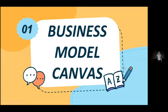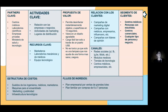Business Model Canvas. Este se compone por nueve bloques. El primero es Partners Clave, que es cómo nuestros compañeros de negocio nos van a ayudar de una forma más avanzada que nosotros. En este caso, los centros médicos, laboratorios científicos, empresas privadas, Ministerio de Salud y Tecnología. Hemos colocado este último ya que éste nos ayudará a que nuestro producto sea indispensable en los centros médicos nacionales, locales o regionales.